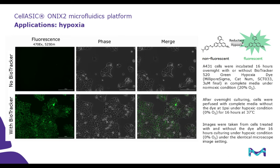Now let's look at intracellular oxygen level and how it is affected by hypoxia. Here we are going to use an intracellular hypoxic probe, BioTracker 520. This probe is highly cell-permeable and becomes fluorescent only inside of the cell under hypoxic condition. Images show A431 cells loaded with and without the probe and subjected to hypoxic condition for 16 hours using the CellASIC setup. The image on the bottom left shows the cells becoming bright green due to activation of the intracellular hypoxic probe.